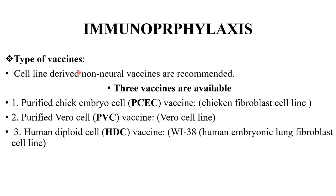Immunoprophylaxis — types of vaccines: neural vaccines are no longer used due to many neurological adverse effects. Now, cell-line derived non-neural vaccines are recommended. We have purified chick embryo cell vaccine, purified Vero cell vaccine (PVCV), and human diploid cell vaccine — the most preferred one.